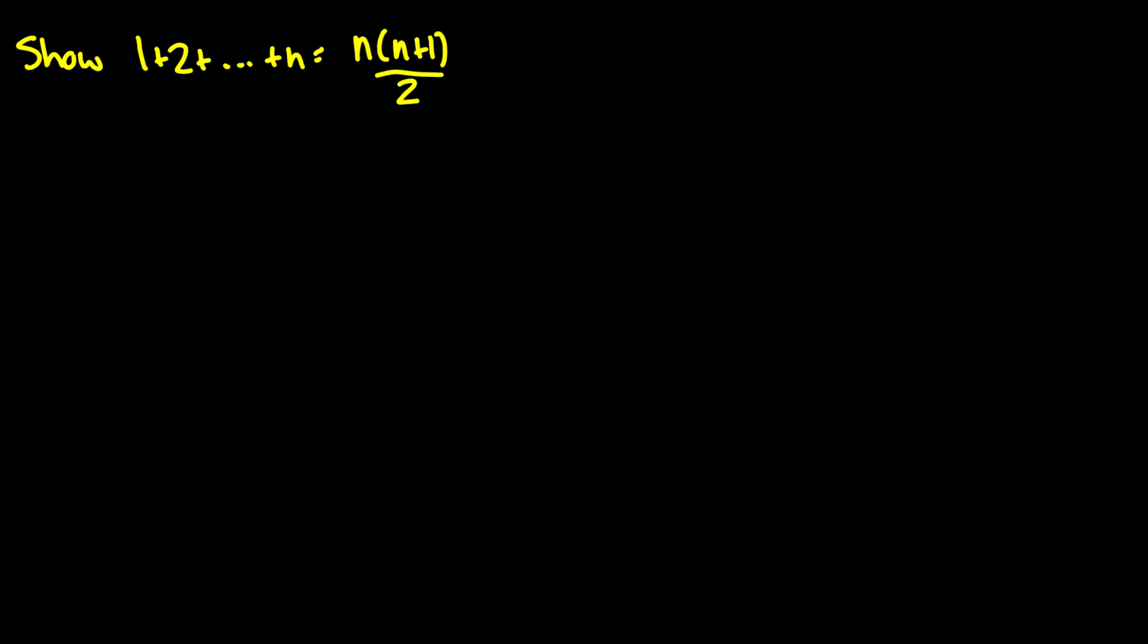Okay, so let's show that 1 plus 2 plus dot dot dot all the way up to n is equal to n times n plus 1 over 2. Well, we need to start with a base case. And we need to assume that n is equal to 1. Now we have to prove that this holds for the first number. So what we're saying here is that 1 is equal to 1 times 1 plus 1 over 2, which is equal to 1 times 2 over 2, which is just equal to 1. So this is good.